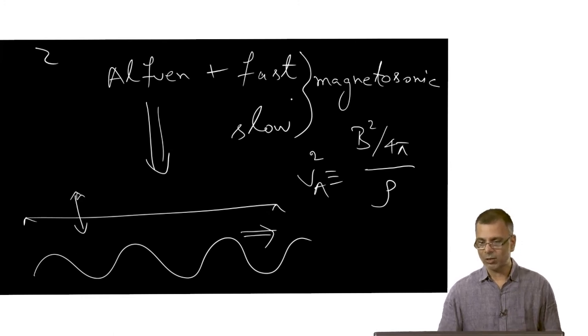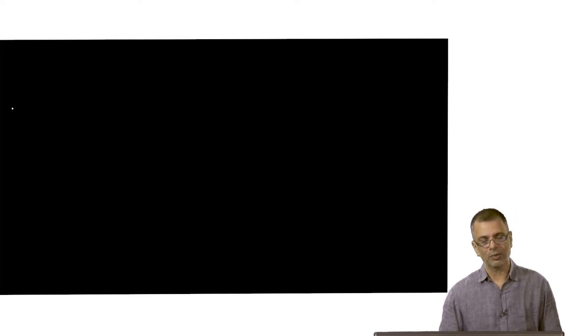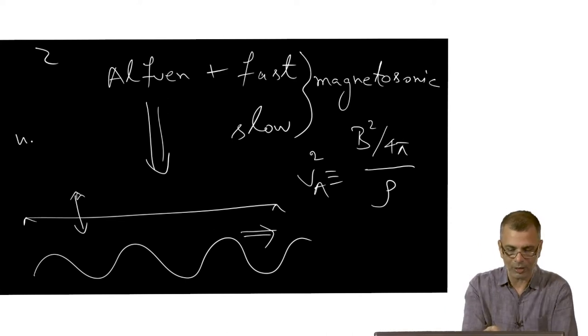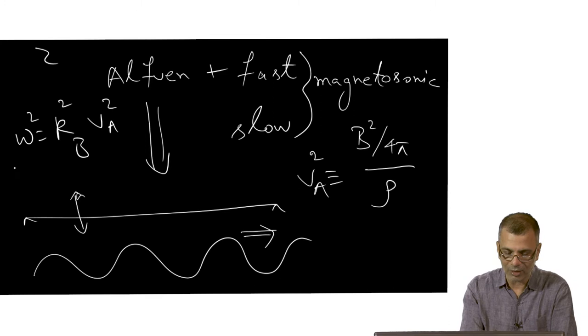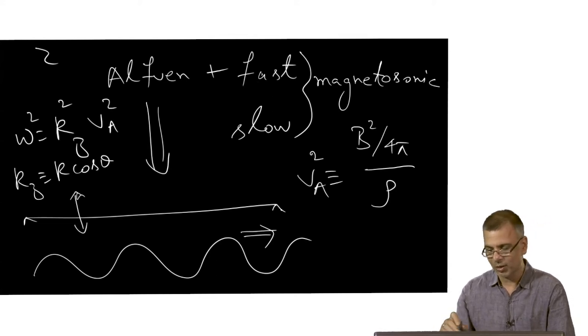The fast and slow magnetosonic modes are sound-like waves, and their characteristics depend upon the direction of propagation with respect to the background magnetic field. That's also true for the Alfvén mode: the dispersion relation is ω² = k_z² v_A², where k_z = k cosθ, and θ is the angle between the wave vector k and the magnetic field direction. So propagation is anisotropic — θ matters.